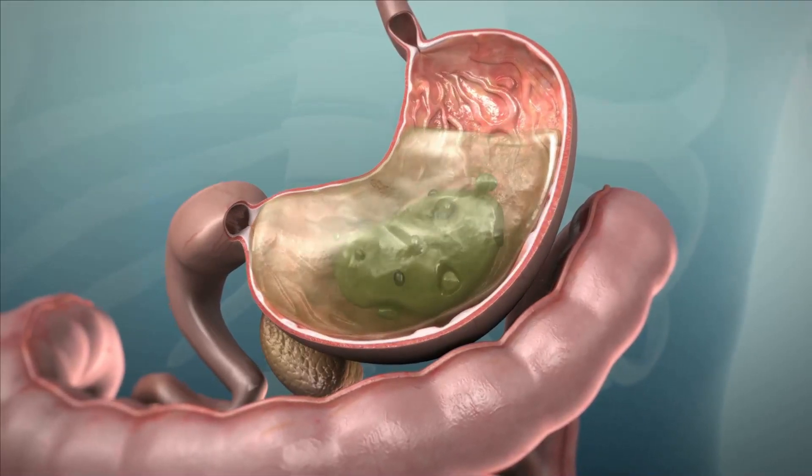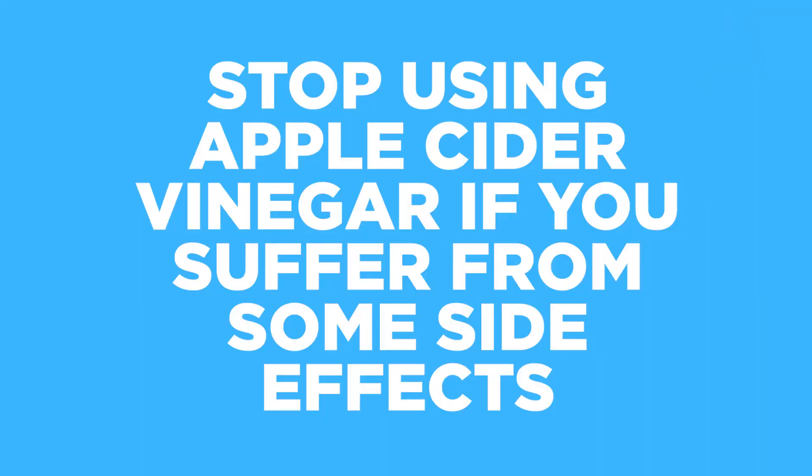Number fourteen is low stomach acid. Low stomach acid decreases absorption of iron and other minerals and vitamins needed for hair growth. A common first symptom is heartburn. You can benefit from one teaspoon of apple cider vinegar in a glass of water with every meal to acidify your stomach and improve mineral absorption. If you experience side effects after the first week, stop.